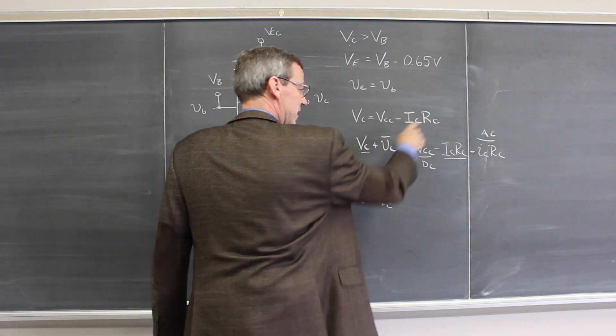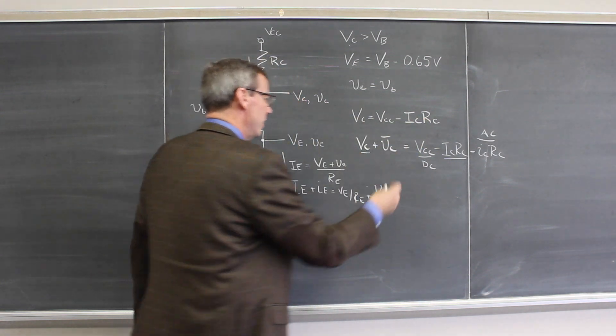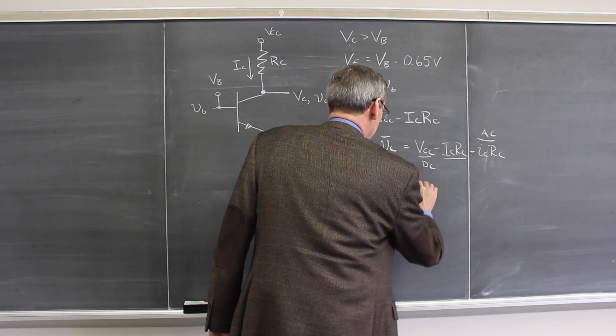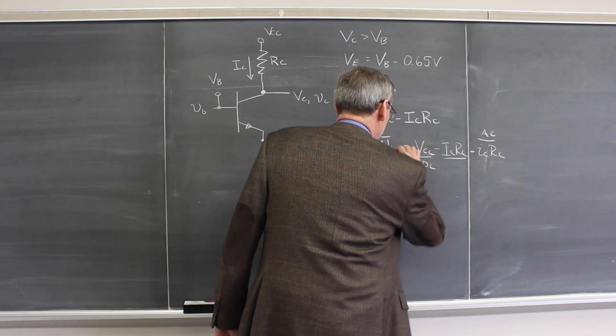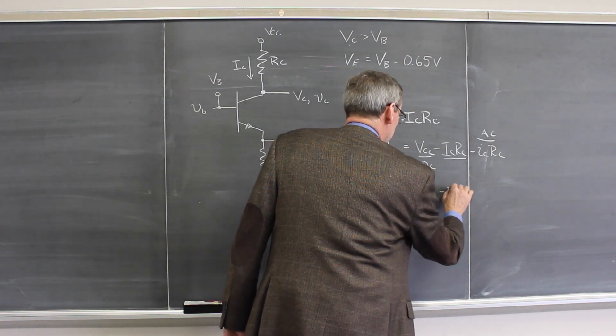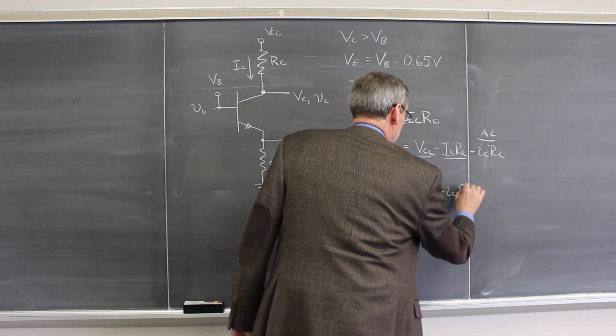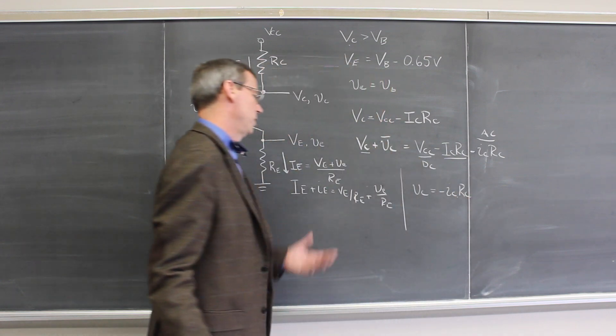So I have the DC gives me exactly the same relationship I had before. And the AC now gives me VC is minus IC RC. That's nice there.